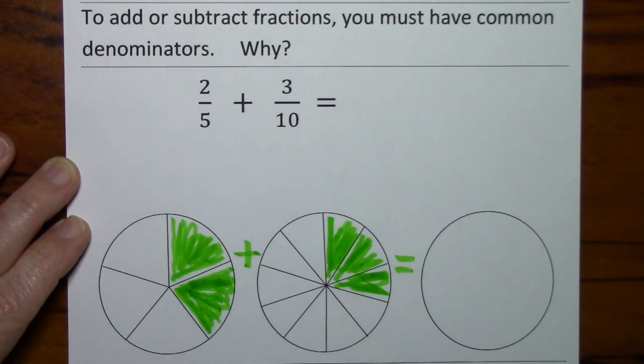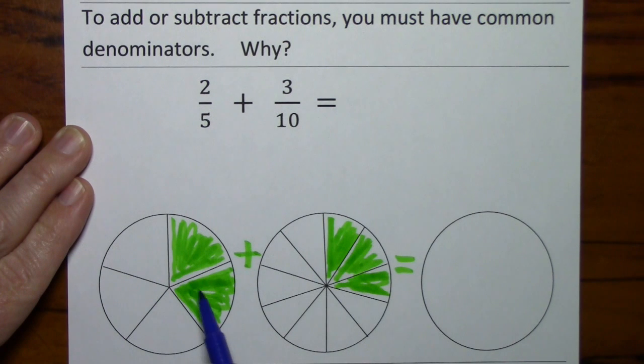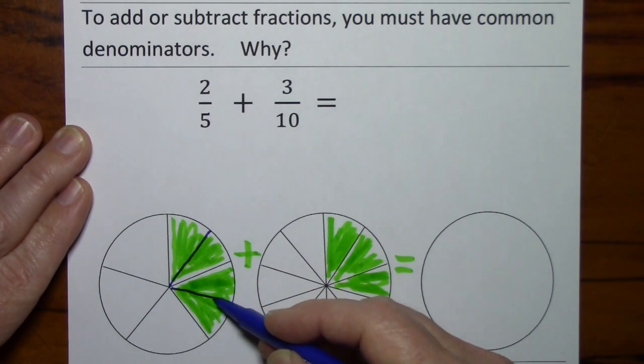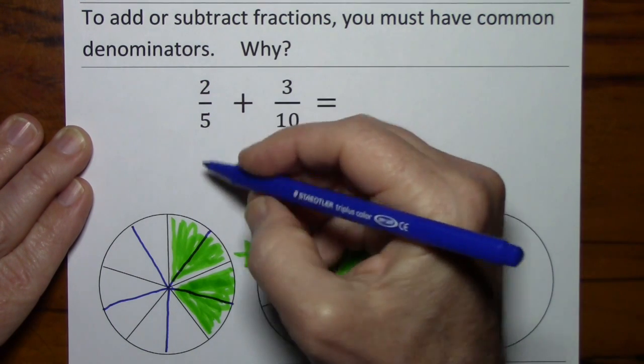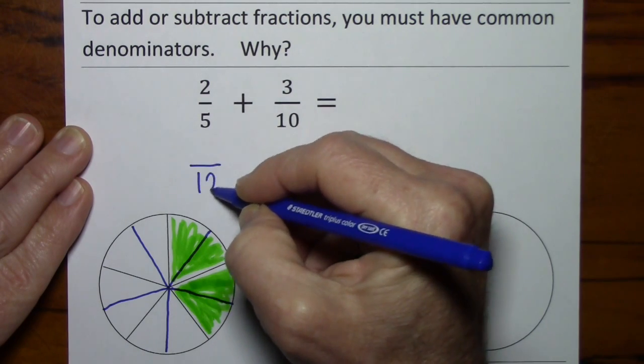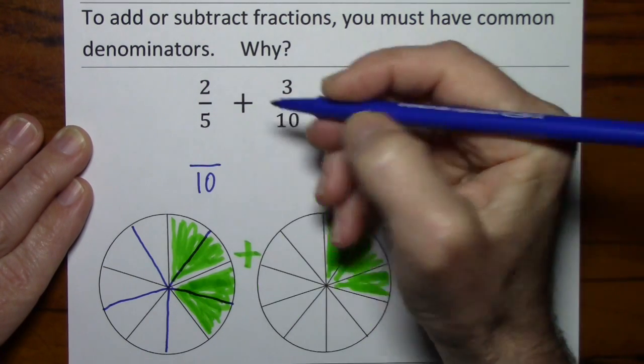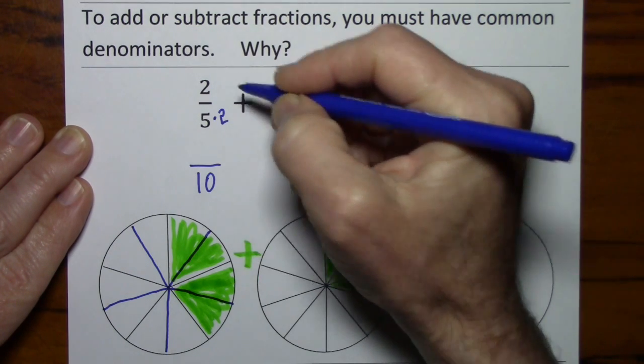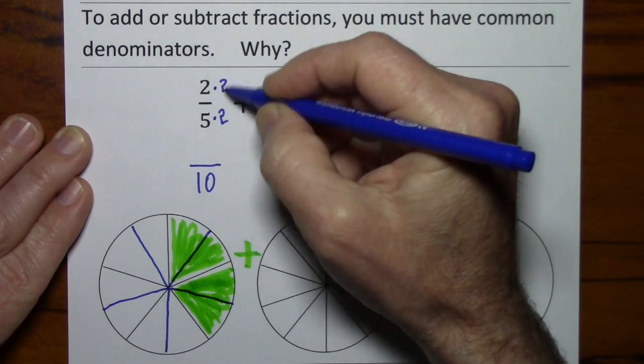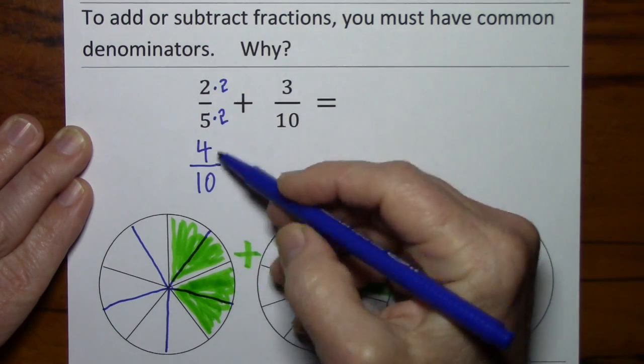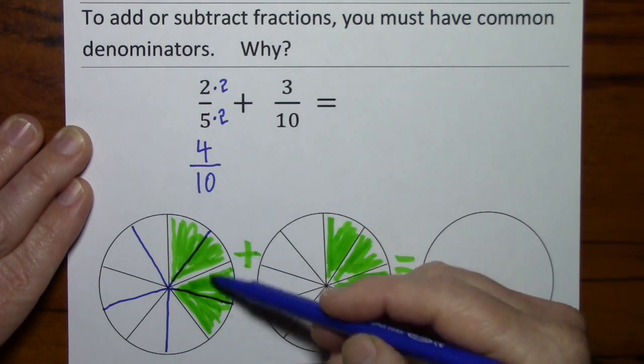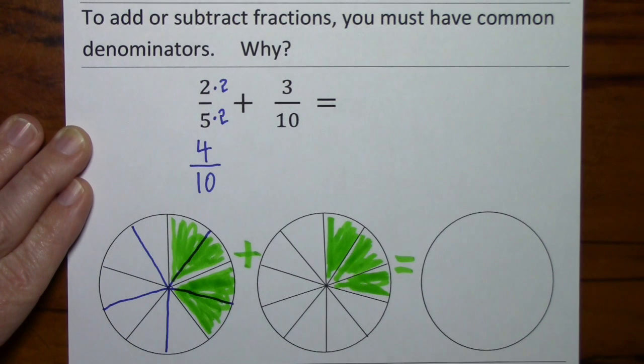So we need a common denominator. This circle I could divide into tenths, and then we would have 4 tenths. So mathematically, to get from 5 to 10, we multiply by 2. Multiply by 2. You always have to do things in a balanced way. This gives us 4 tenths. And I haven't changed the value, I just changed the way it looks.